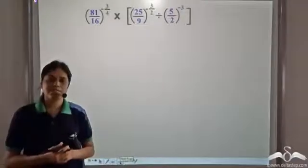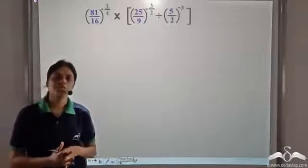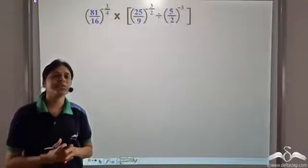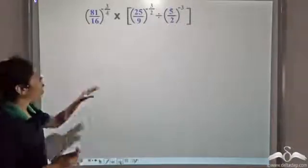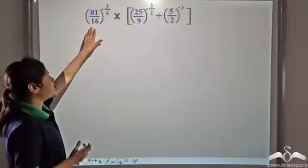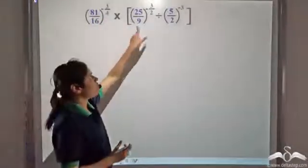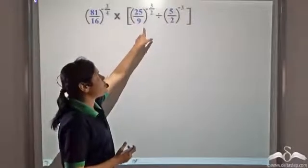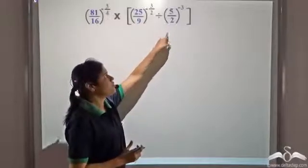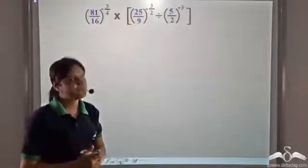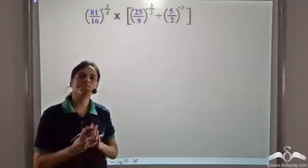We need to simplify this expression. It looks like a huge expression, but using the laws of exponents we can simplify it very easily. So first let us bring all the exponentials to their simplest form. We have negative exponents here. We know that a by b to the power negative n can be written as b by a to the power n — that is, if we take the reciprocal of the fraction, the exponent becomes positive.